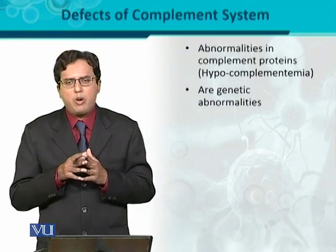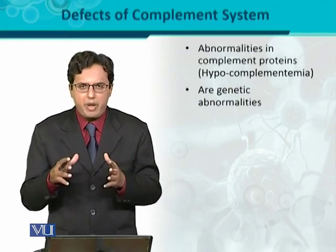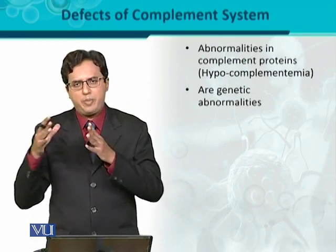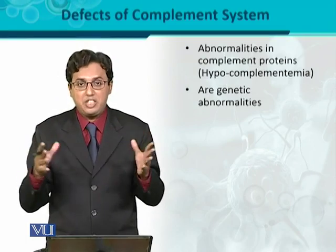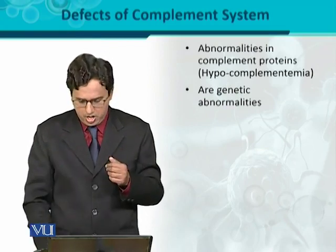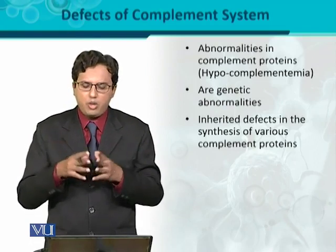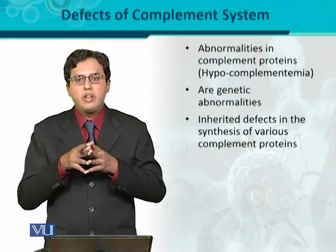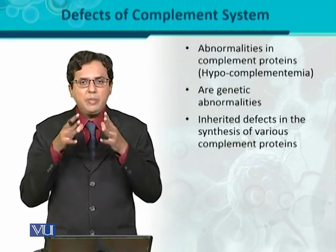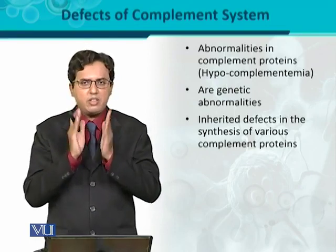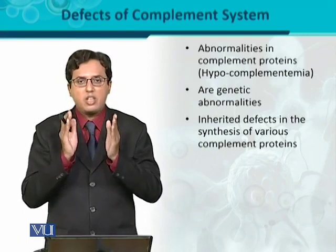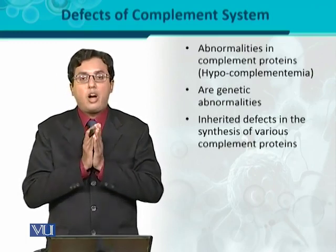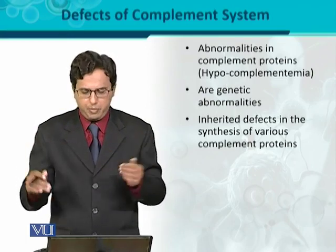Such defects in the immune system are genetic abnormalities — they are congenital and inherited, meaning these problems come from the parental side. That is why these are primary immunodeficiency in nature. The inherited defect occurs in the synthesis of various complement proteins, because complement proteins are synthesized by the liver. When the liver synthesizes these proteins, there can be defective or decreased synthesis, meaning the proteins produced may be defective and unable to perform their function — hence primary immunodeficiency.